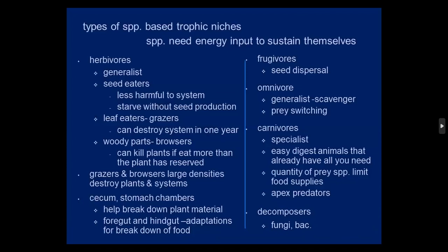There are types of species based on trophic niches. A trophic niche is really where a species fits into its biological community, most often based on feeding. Starting with herbivores: they are generalist seed eaters. It's less harmful to a system, but they will starve without seed production — many years without rain means no seeds produced from flowers, leading to starvation. That's what you'll see with J-curve eruptive populations, like the Phyllotis.